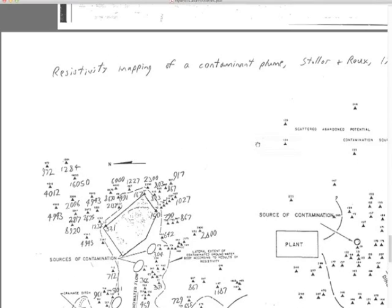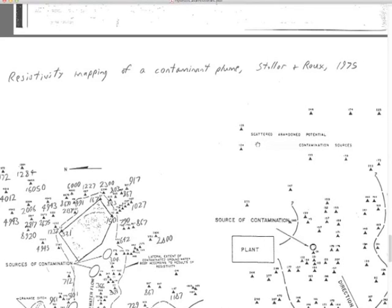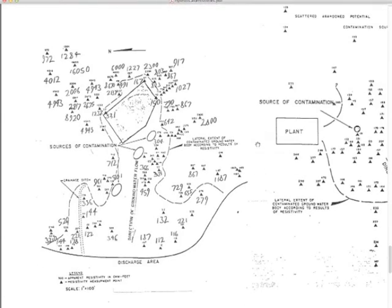Now for the Stoller and Rue paper examples on waste containment. They used a fixed winter array with a constant A-spacing and simply moved it around to collect many point measurements of apparent resistivity — mapping rather than sounding. They wanted as many locations as possible. The first example appears to be a mine dump leaking acid water, which is more conductive than fresh water. The groundwater flow direction was generally westward.